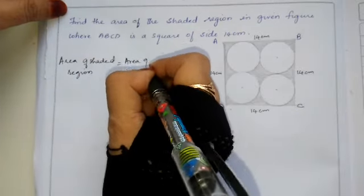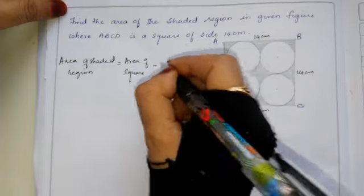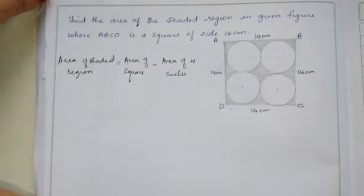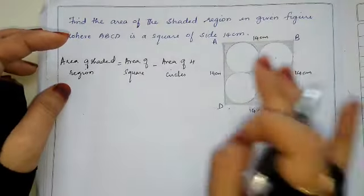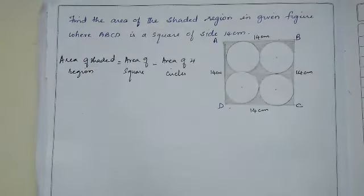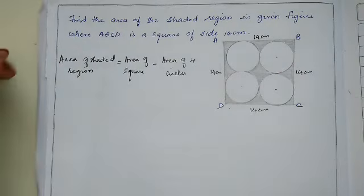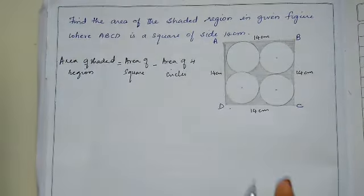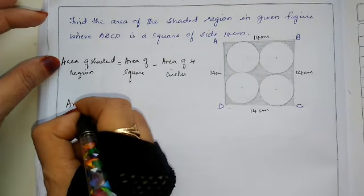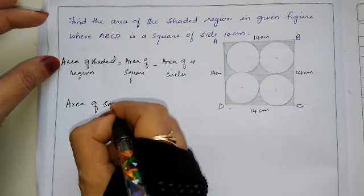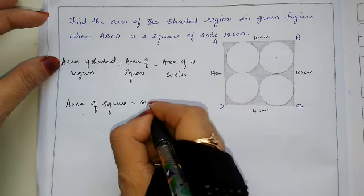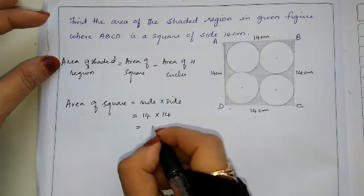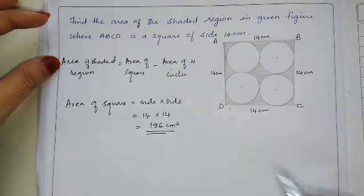Area of shaded region equals area of square minus area of 4 circles. If we remove the 4 circles from the square we get the shaded region. First find area of square: area of square equals side into side equals 14 into 14 equals 196 cm square.